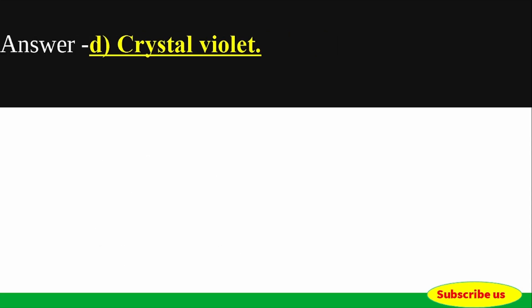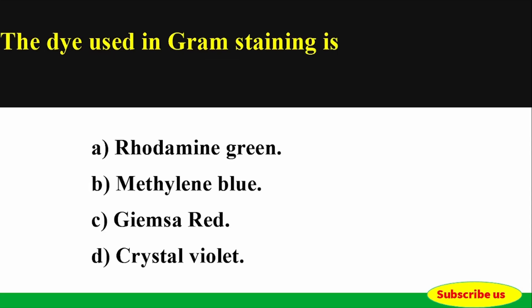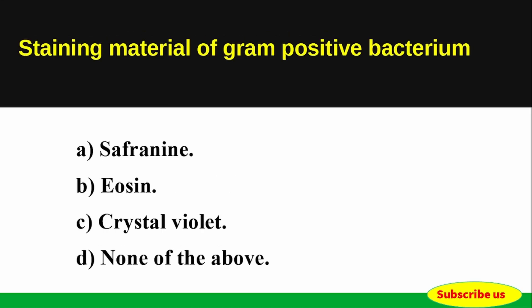Correct answer: Option D — Crystal Violet. The dye used in Gram staining is Crystal Violet.